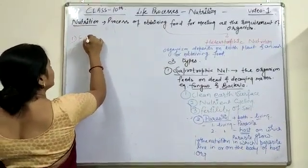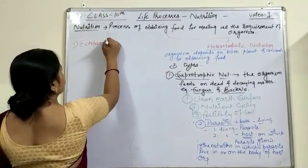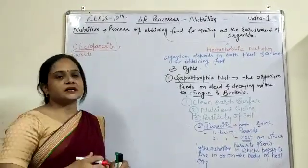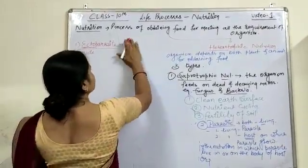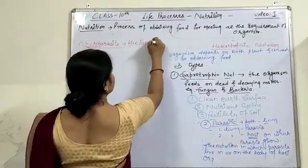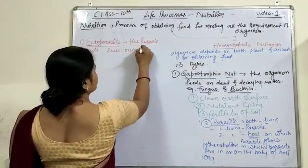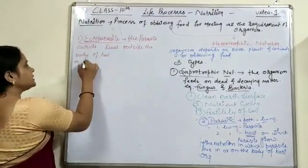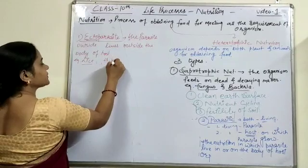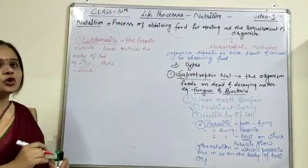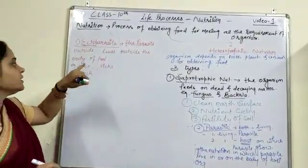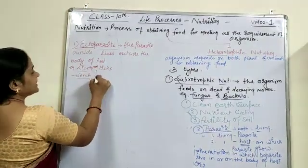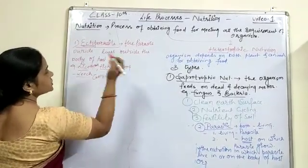Parasitic nutrition is of two types. The first is ectoparasite — 'ecto' means outside — meaning the parasite lives on the outside of the host's body. Examples include lice, ticks, and leeches. For lice, the human is the host; for leeches, cattle are the host; and for ticks, the dog acts as the host.